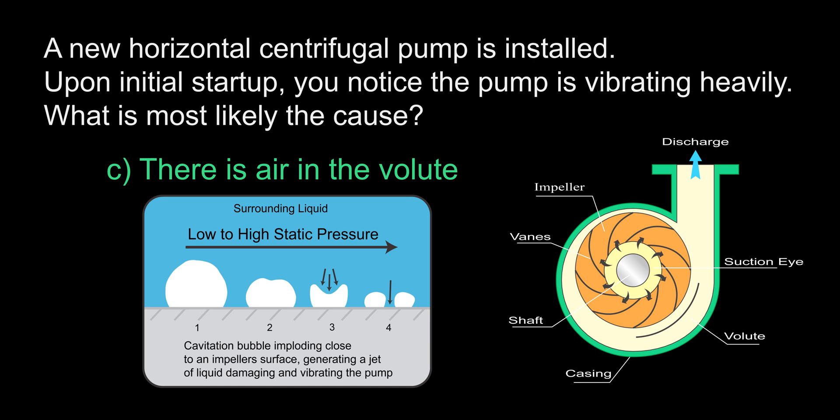To explain further, when the static pressure on the suction side of the pump becomes lower than the water's vapor pressure, bubbles form. As water is moved quickly to the discharge side of the pump, the pressure increases, collapsing the bubbles.